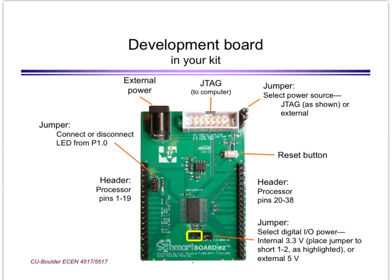Here is the development board, which simply includes the microcontroller and header pins for easy access to its pins. There is a JTAG port to connect the JTAG box, which is then hooked up to the USB port of a computer — this is how we upload code and do debugging. The board also includes a jumper to select an onboard LED, and a jumper to select whether power comes from the JTAG or from external power, which is useful when operating the board standalone, away from the computer — as we will do often in the lab when the whole PV system is running.